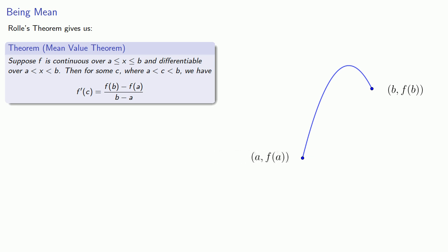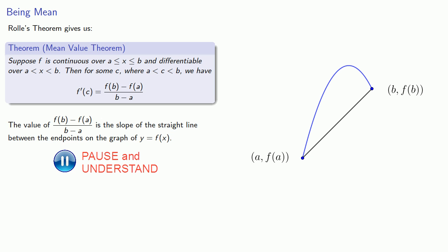And if we sit and stare at this, we realize that the value of this expression is the slope of the straight line between the end points on the graph of y equals f of x. So the mean value theorem says that there's some point where the tangent line parallels the straight line.